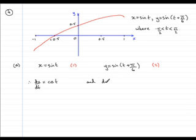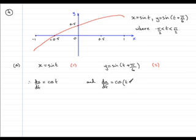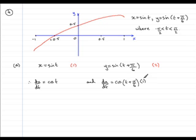dy/dt will equal the differential of sine of anything is cos of that function, so that would be cos of t plus pi upon six. Then I differentiate the inner function with respect to t, which gives one. Using the chain rule, this tidies up to cos of t plus pi upon six.